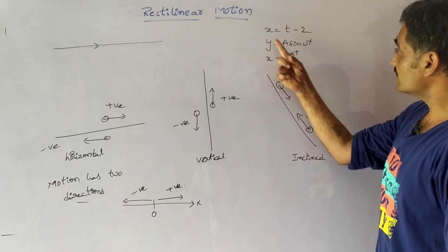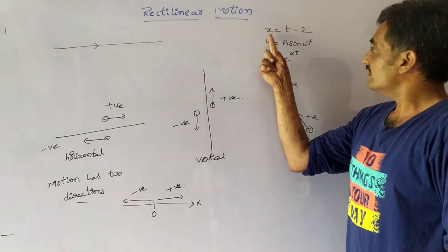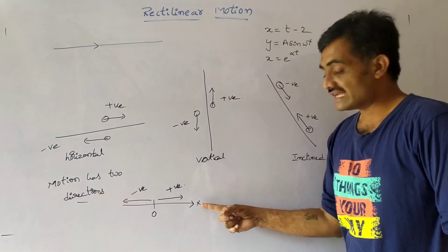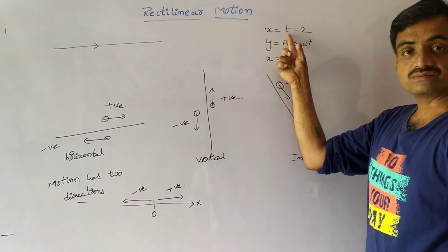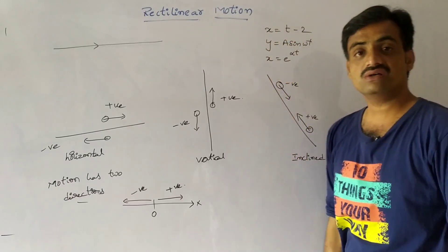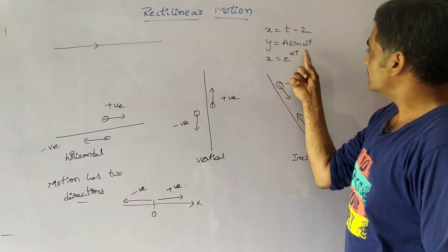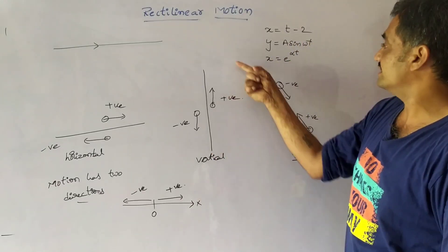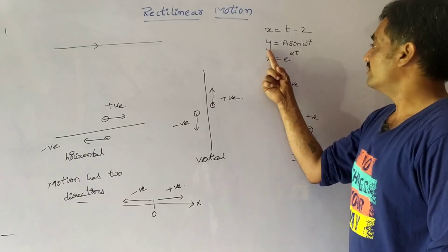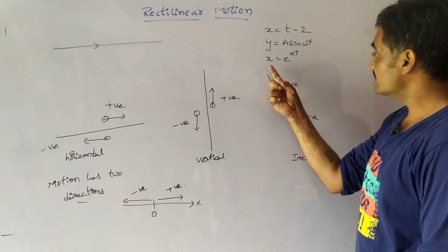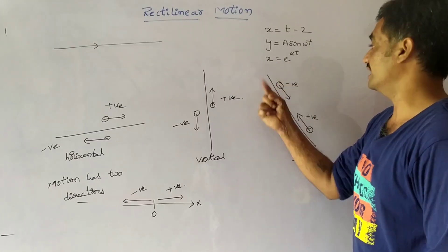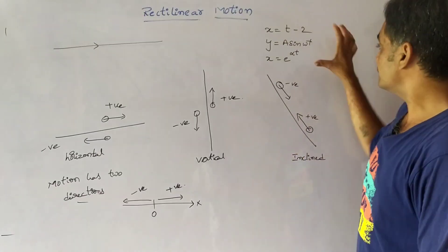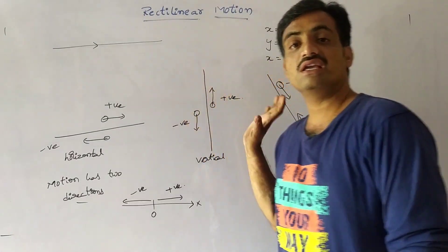Observe that x = t − 2 shows the body moving around the x axis with respect to time. The equation y = A sin(ωt) shows the body moving around the y axis with respect to time. And x = e^(αt) shows the body moving around the x axis with respect to time. In this way, we can represent the rectilinear motion equations.